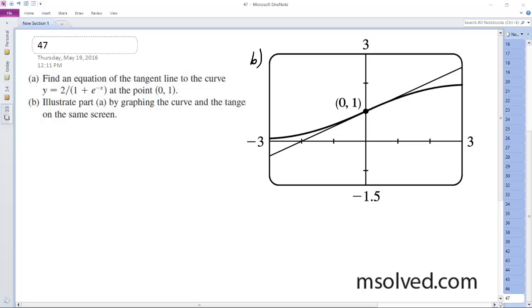We want to find an equation for the tangent line to the curve 2 over quantity 1 plus e raised to the x at the point 0 comma 1.